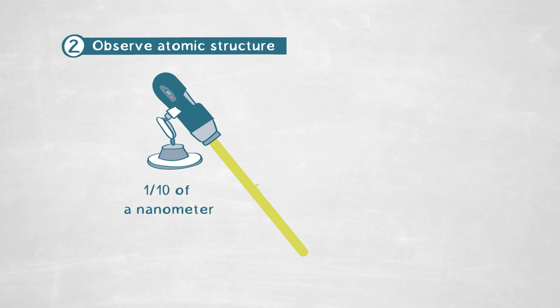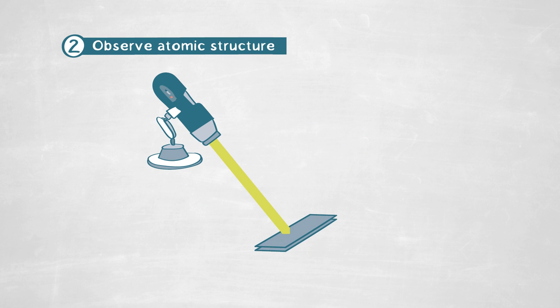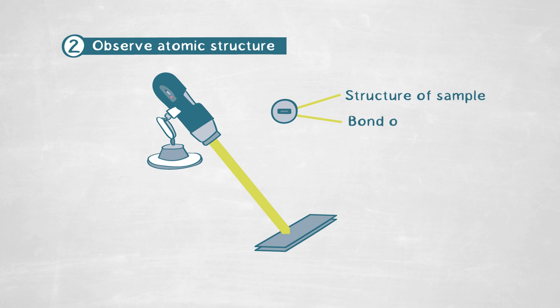This beam is formed by high-energy electrons that travel almost at the speed of light. While we scan our sample containing the grain boundary, these electrons interact with the atoms in the sample. Some electrons get scattered, and these scattered electrons contain rich information about the structure, how atoms are bonded, or even the chemical composition.